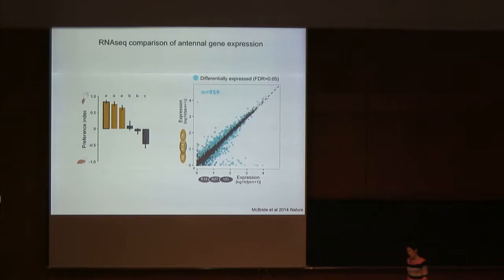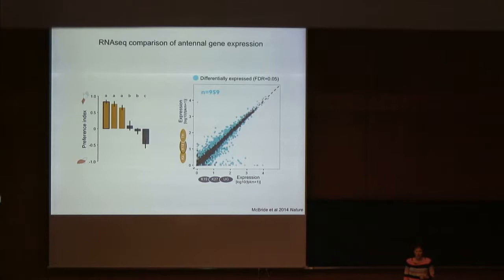That's way too many to follow up on functionally, and also these two mosquito populations differ in many ways beyond host preference. Many of these differences could be related to other phenotypes or could have randomly accumulated over time as these two populations are no longer exchanging very many genes. So we needed a way to filter these thousand differences and identify those specifically and genetically linked to the difference in preference.